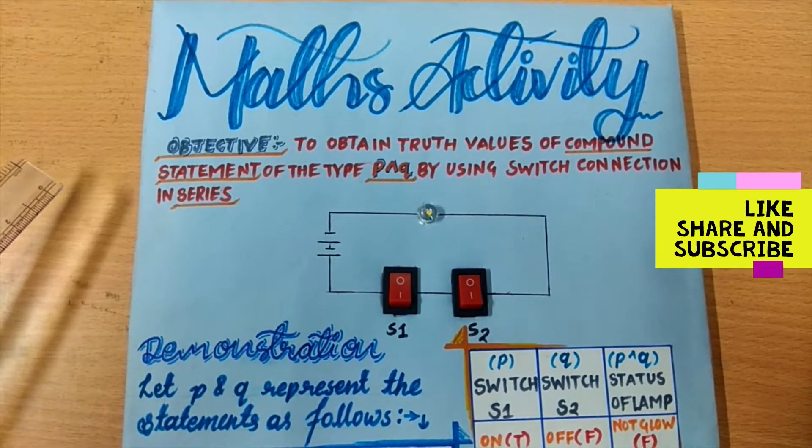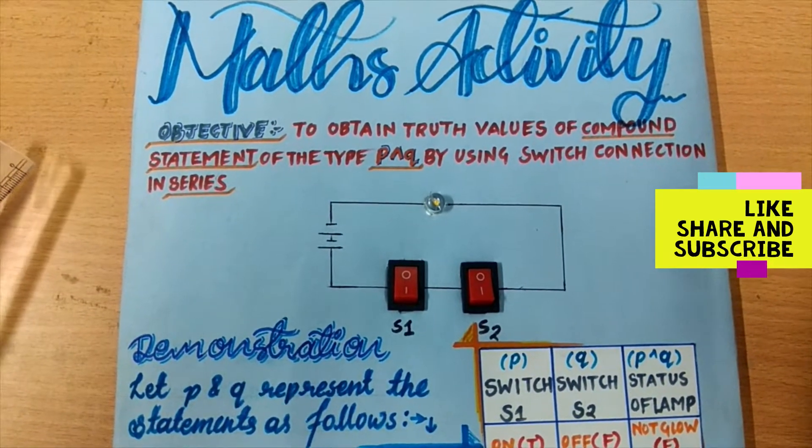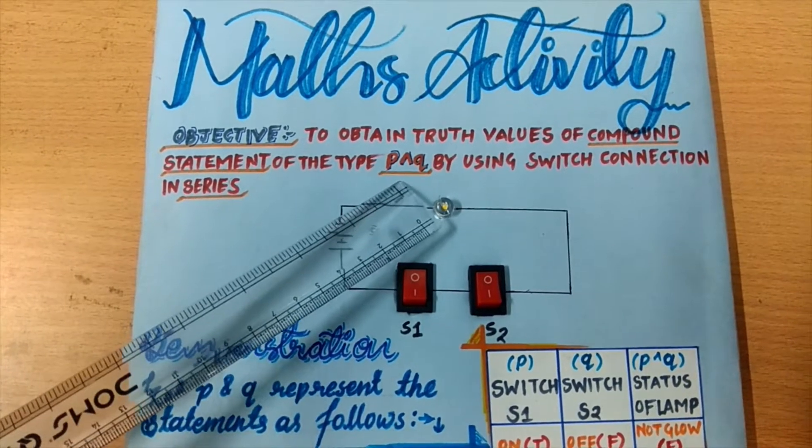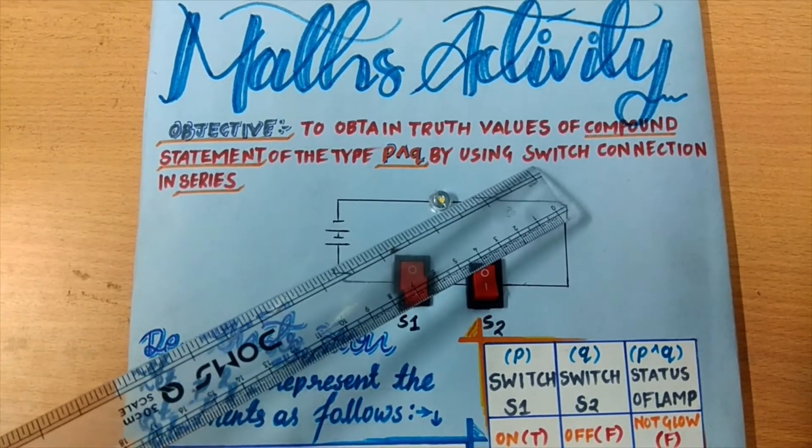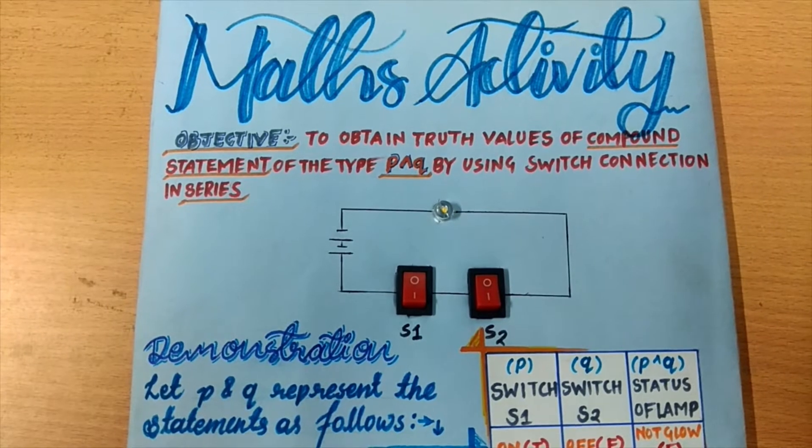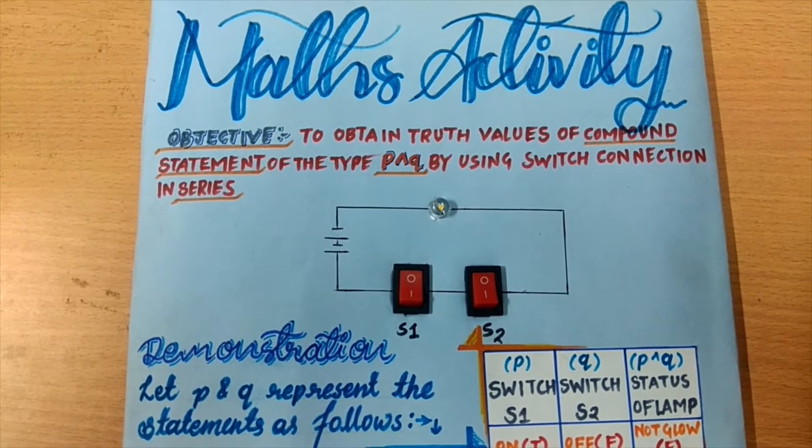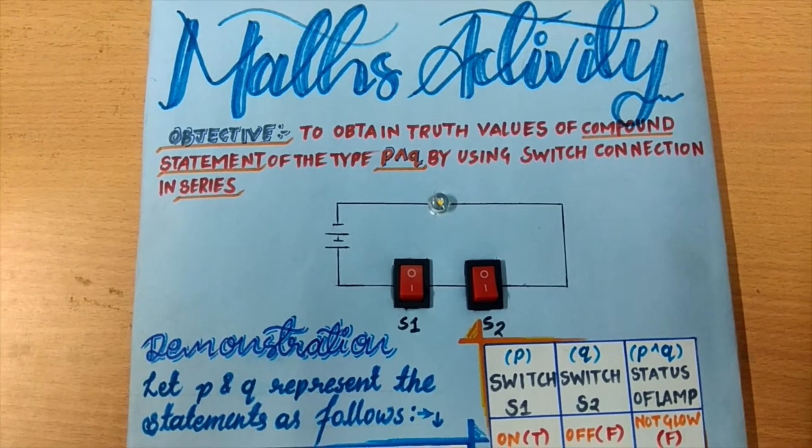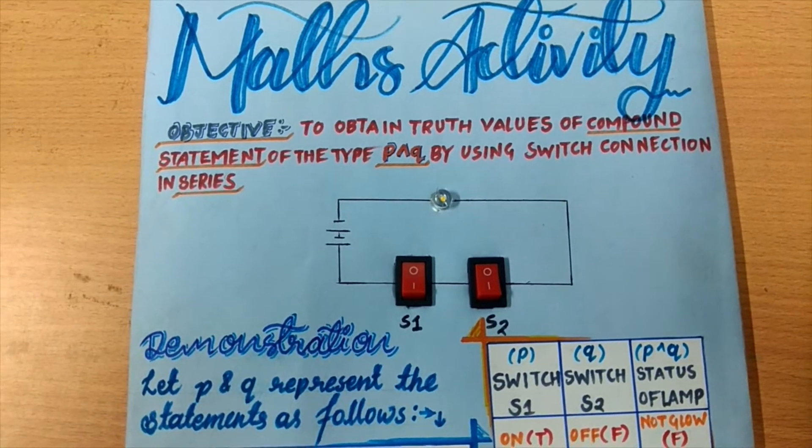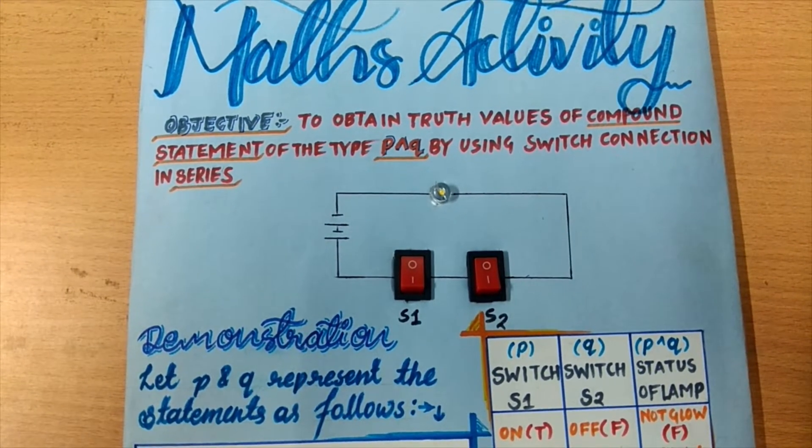First we have to know about the compound statement P and Q. The compound statement P and Q is the statement formed from the two separate statements P and Q by the help of AND conjunction and is only true if both of its component statements P and Q are true.